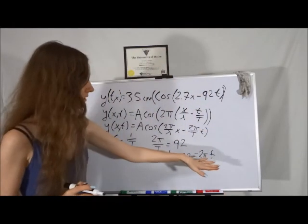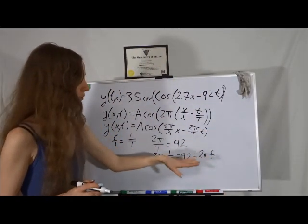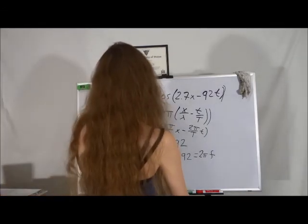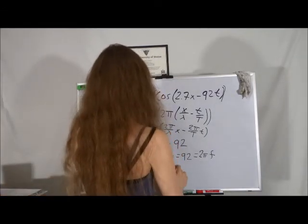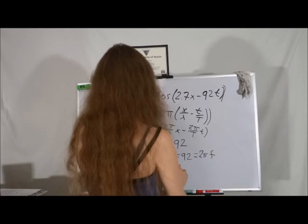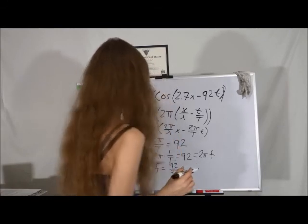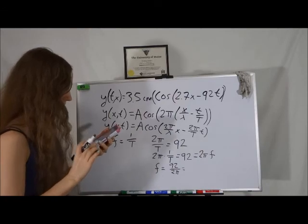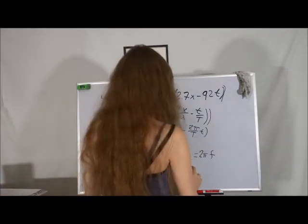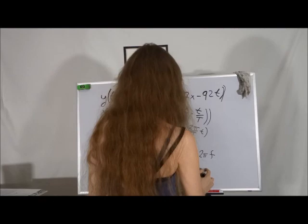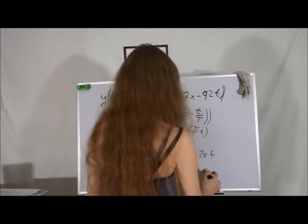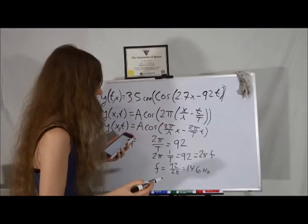So if you want our frequency, we're just going to divide both sides by 2 pi, and we get the frequency is equal to 92 divided by 2 pi. And this works out to be about 14.6 hertz, or to 2 sig figs, 15 hertz.